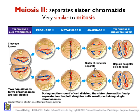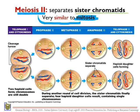In meiosis 2, the goal is to separate sister chromatids. That is why meiosis 2 is very similar to mitosis — in mitosis we are also separating sister chromatids, so the goal is basically the same.